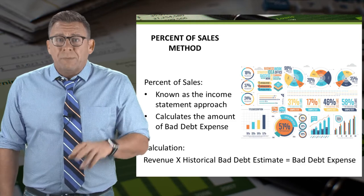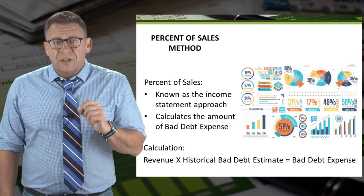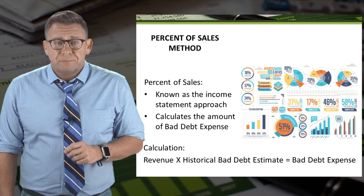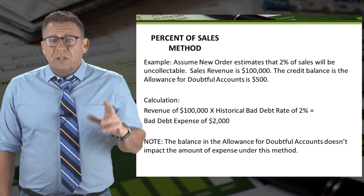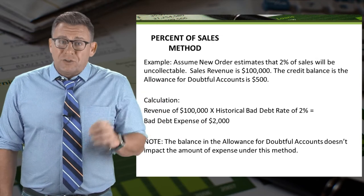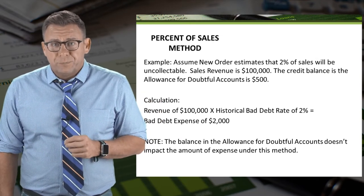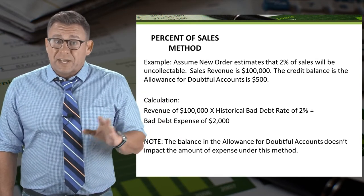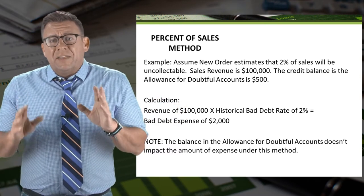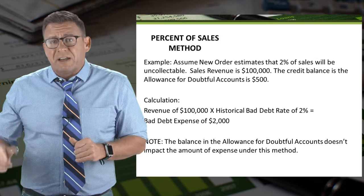The amount we calculate is the amount used in the adjusting journal entry to record bad debt expense. In this example, assume New Order estimates that 2% of sales will become uncollectible. They had sales of $100,000, and the allowance for doubtful accounts had a credit balance of $500.